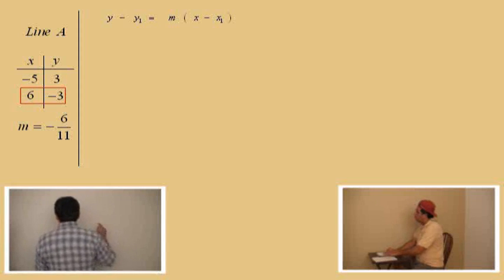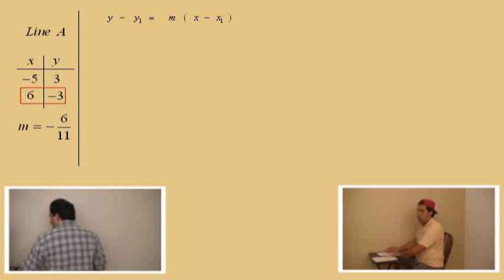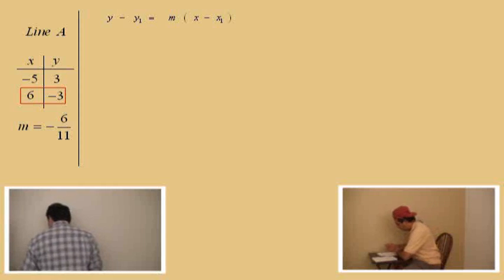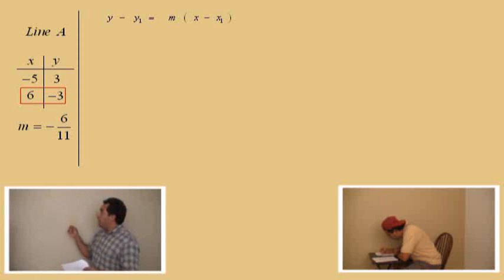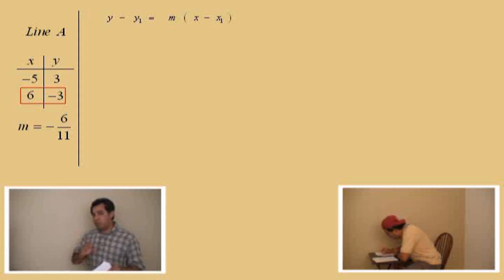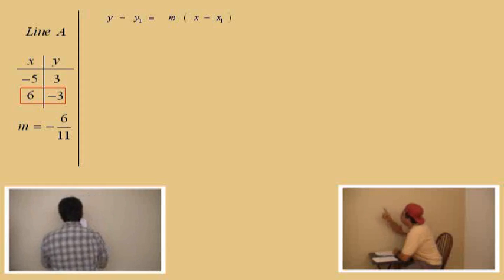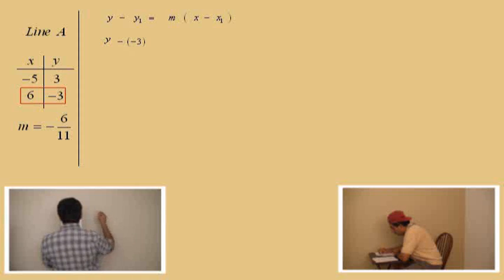Now, let me remind you: Charlie, what is this equation up here called? The point-slope formula. We're going to choose six comma negative three. Now we're going to start plugging things in. Since we chose that point, six comma negative three, that makes the x1 value six and the y1 value negative three. So, we have y there, and now we're going to subtract the y1 value. What's our y1 value? Negative three. Very good.